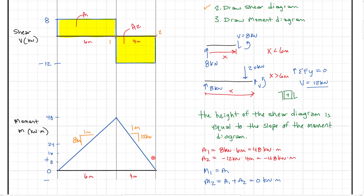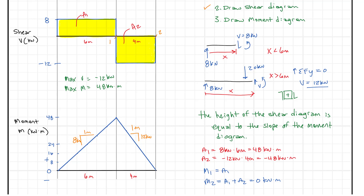We've now identified the points of maximum shear and moment. The maximum shear equals minus 12 kilonewtons — and when designing a beam we look at the absolute value. The maximum moment is 48 kilonewton-meters. I'll shade in the diagrams to finish. We've gone through the whole problem and found what we were looking for.